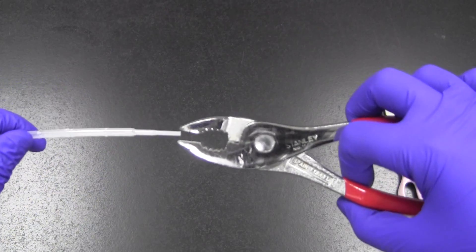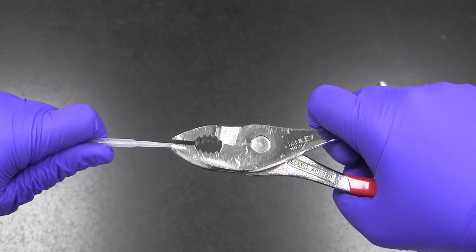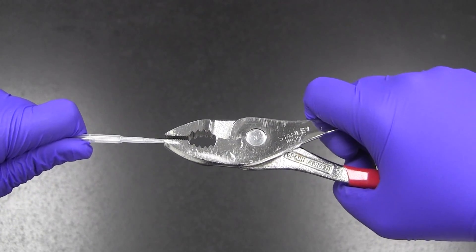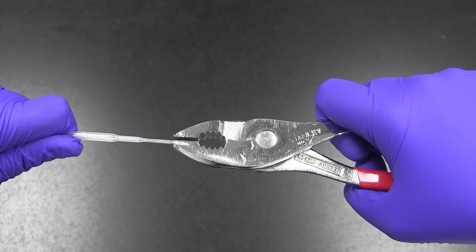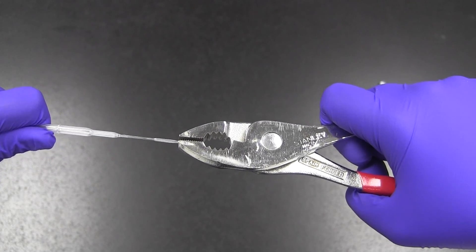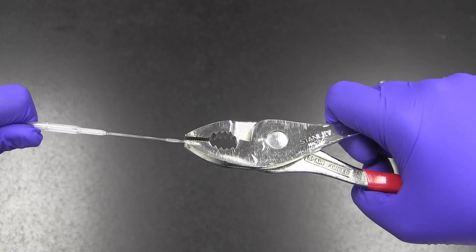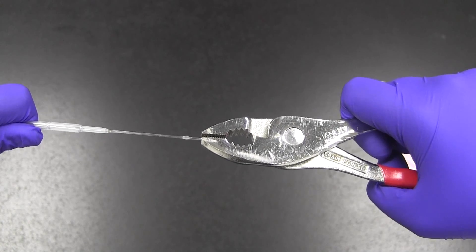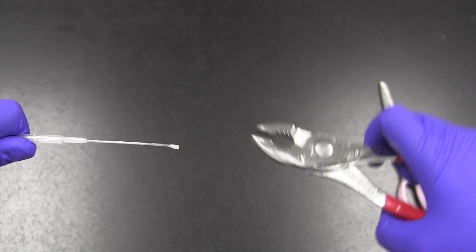To make the modified pipette, obtain a regular plastic pipette and pliers. Grip the tip of the pipette with the pliers and gently pull on the end of the pipette and not on the pliers. This will stretch the plastic. It may take some practice, but now you have a modified pipette.